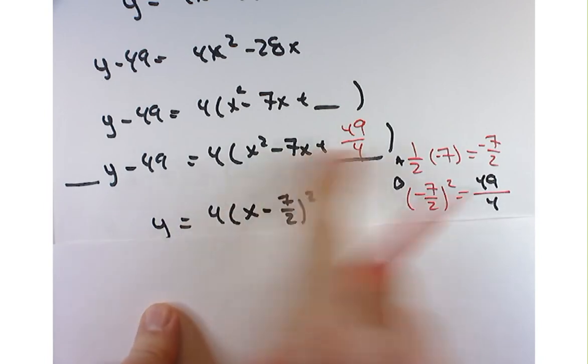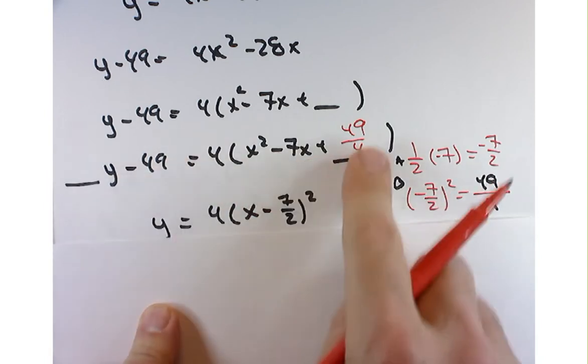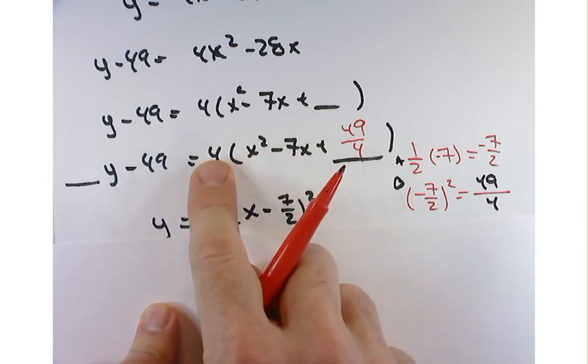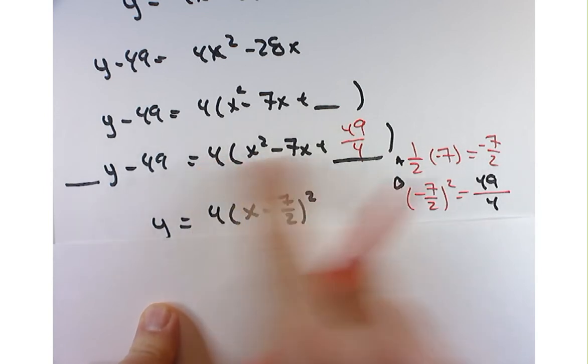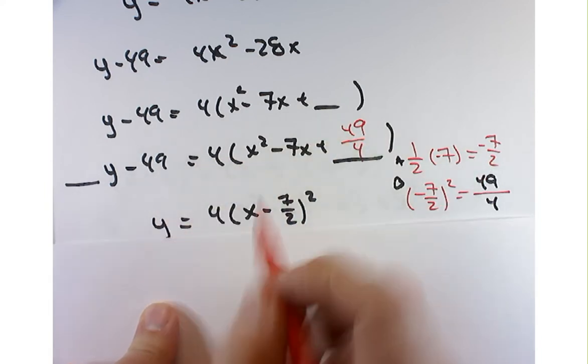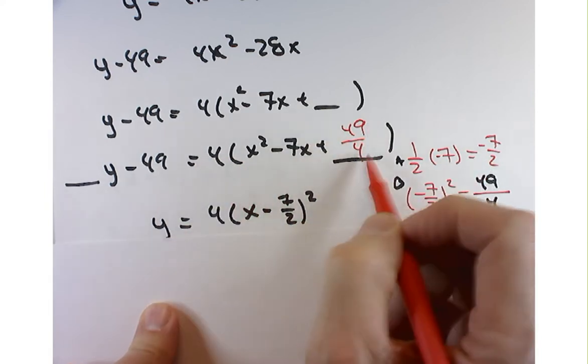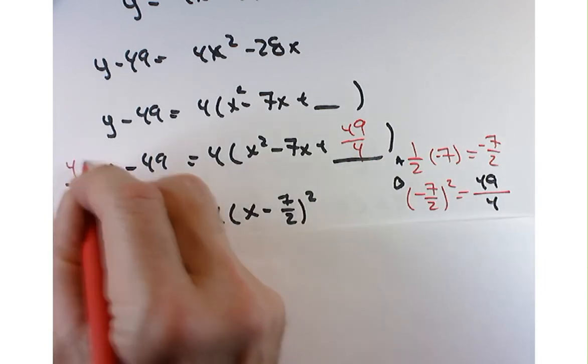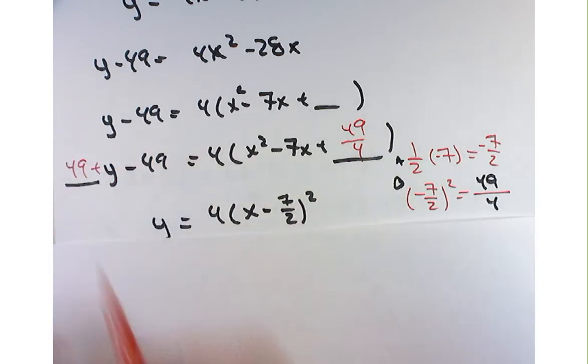Now, I better not put 49 over 4 over here because that would be wrong. I've really changed the right-hand side by 4 times that much. 4 times this is what? 196. 196 divided by 4 is 49. So, oddly enough, the 49 here and the 49 here cancel.